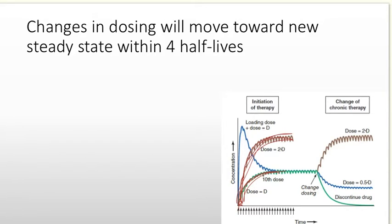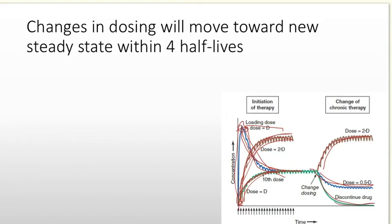Another option is to give a loading dose — you're already at steady state immediately. If you gave a loading dose and wanted to come back down to a lower steady state while giving your regular maintenance dose, that would take about four to five half-lives. Any time you change the dose, it takes four to five half-lives to reach the new steady state. If you quit the dose altogether, it takes four to five half-lives to reach zero concentration.